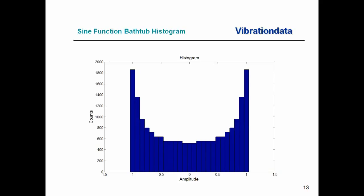When we get to random vibration, in some cases it will have a normal distribution — a bell-shaped curve — which is fundamentally different from the bathtub histogram of sine vibration. This means there is no good direct way to compare sine versus random vibration to determine which is more severe. Later, we will use rainflow fatigue cycle counting on response acceleration time histories to indirectly compare the damage potential of sine versus random excitation.